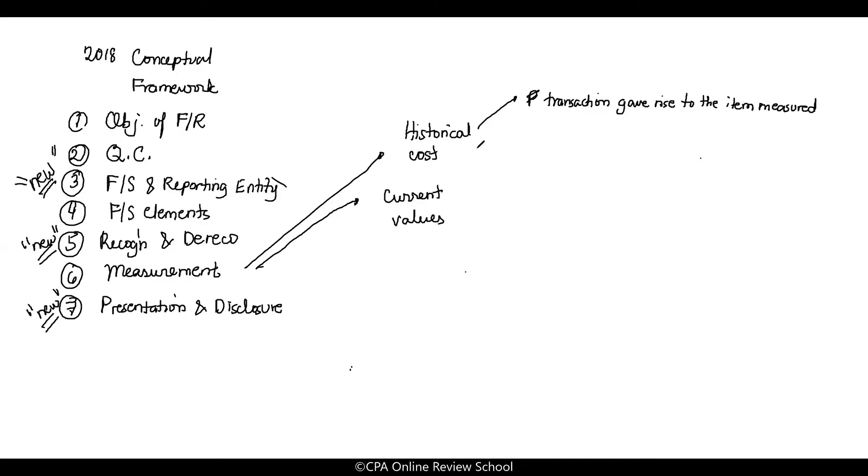Do you understand? For assets, does the historical costs decrease when impaired? Remember that. For liabilities, historical costs increase when becoming onerous, right? If there's interest, the value of the liability increases.